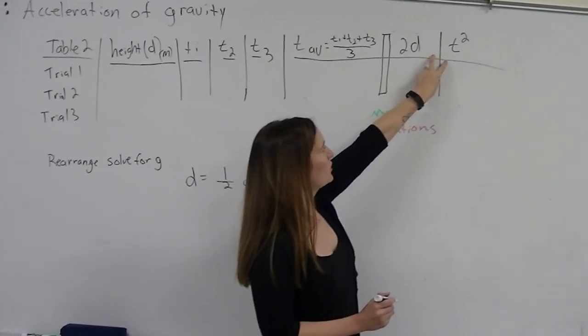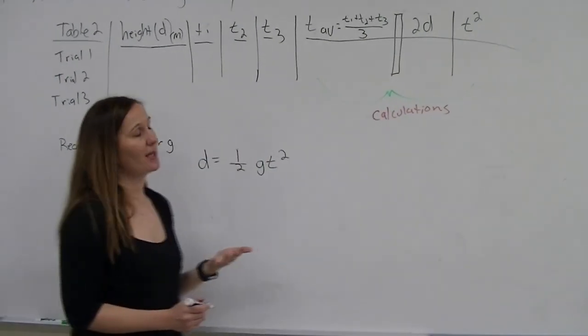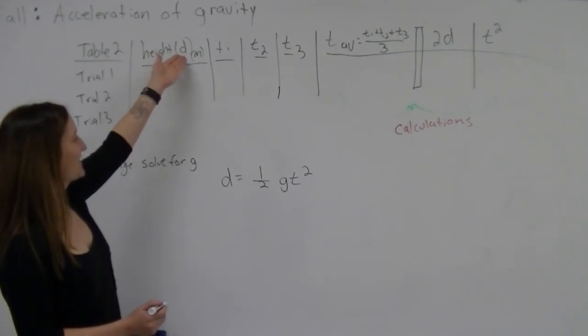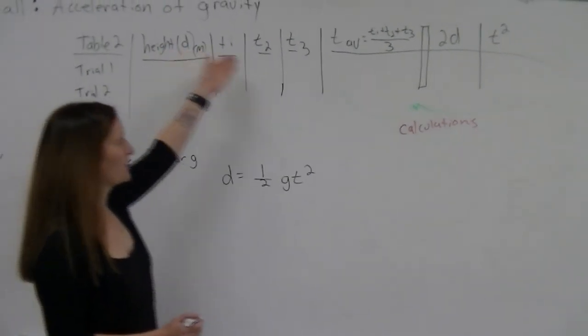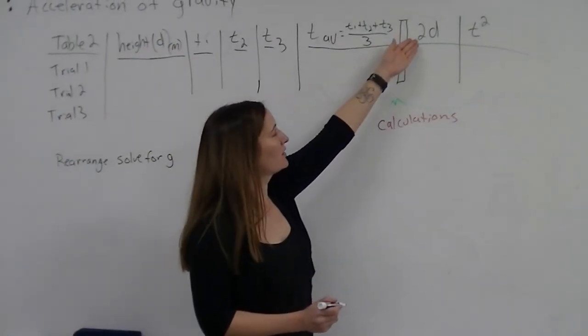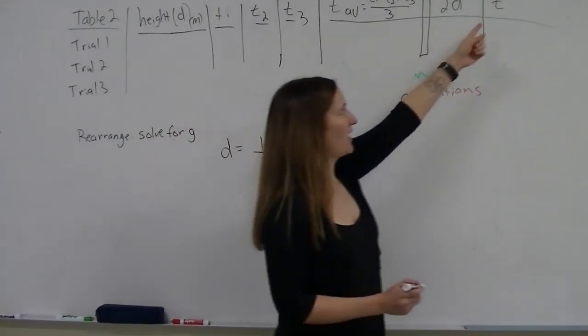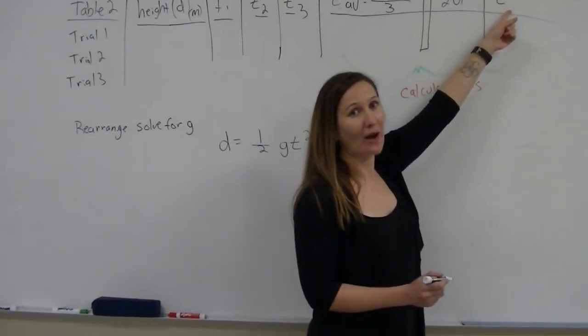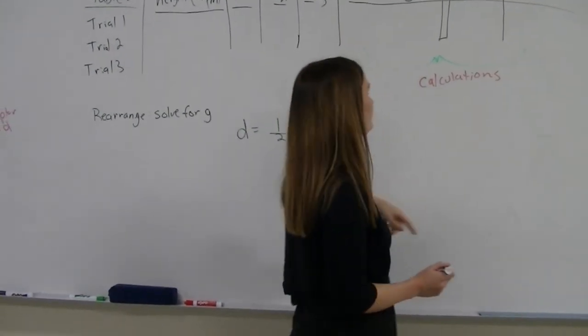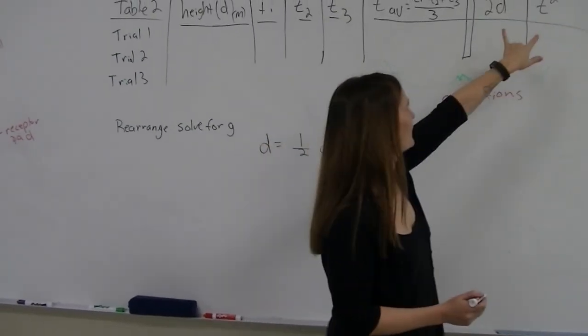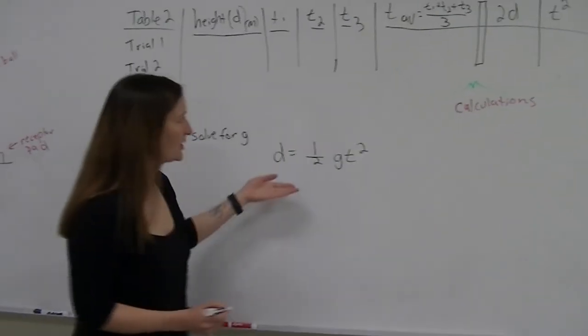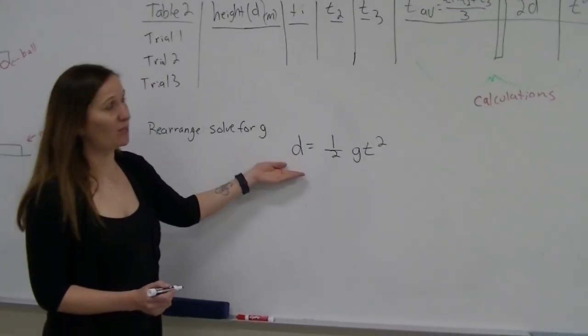The last two columns on your chart, those are also columns you're going to be calculating. You'll be using the distance in meters to calculate here, and then you'll be using your average time when you calculate the T squared. So you're going to be squaring your average times for each of the trials. And this is the data that you're going to use in the equation that I have below.